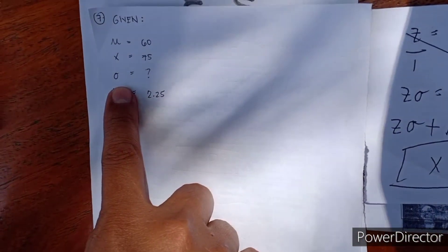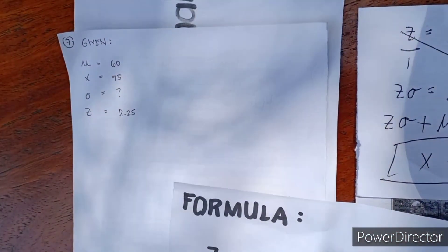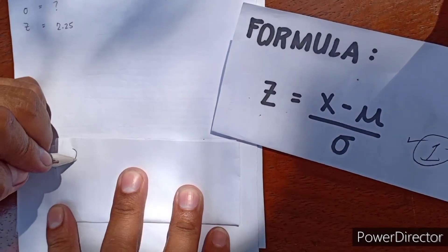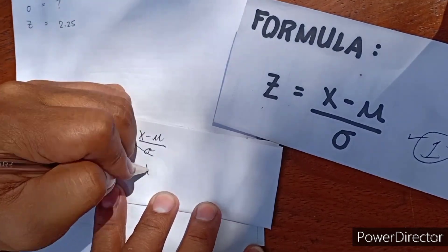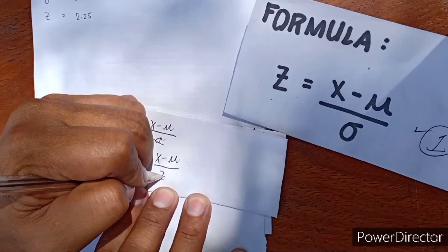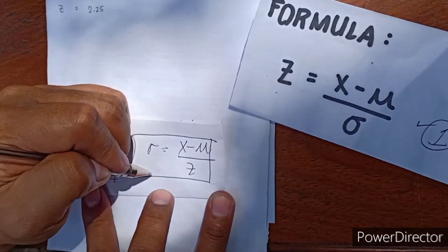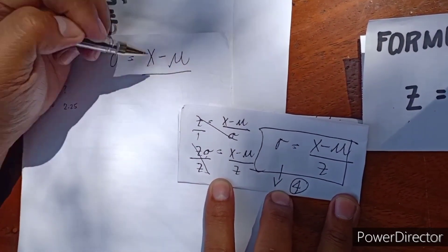Last example: mean is 60, raw score is 75, and the standard deviation is what we are looking for, while Z is 2.25. Let's derive our formula. Starting from Z equals X minus mean over standard deviation, cross multiplying gives Z times standard deviation equals X minus mean. Dividing both sides by Z: standard deviation equals X minus mean all over Z. This is our formula number 4.